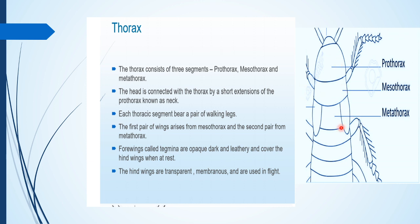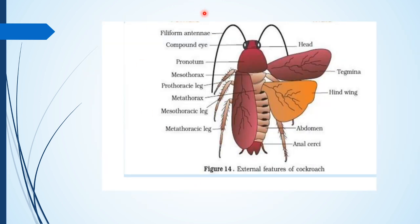This diagram shows the external anatomy of the cockroach. We can see the prothorax, mesothorax, and metathorax. There is a triangular head with two big compound eyes and the antennae. The pronotum covers the prothorax. The tegmina are the large opaque forewings. The mesothoracic and metathoracic legs are walking legs, and the metathorax also bears the hind wings. At the posterior end there are the abdominal cerci. This is the external feature of the cockroach.